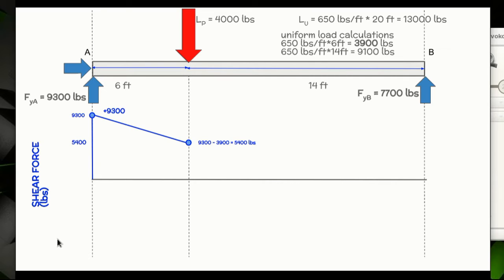The next thing we need to worry about is this point load. The point load is 4,000 pounds and it's going to push straight down. We are going to go from 5,400 minus 4,000, that's going to push us down to 1,400 right here, so put a point, mark it over here, and that's going to be real close to the zero line compared to 9,300.